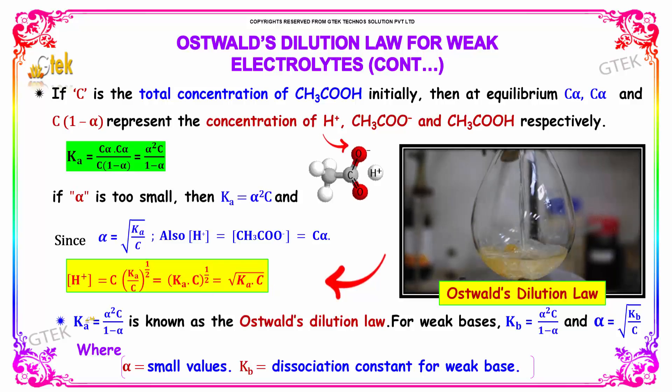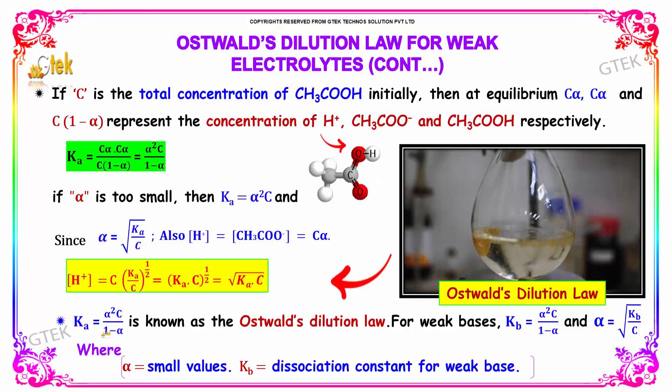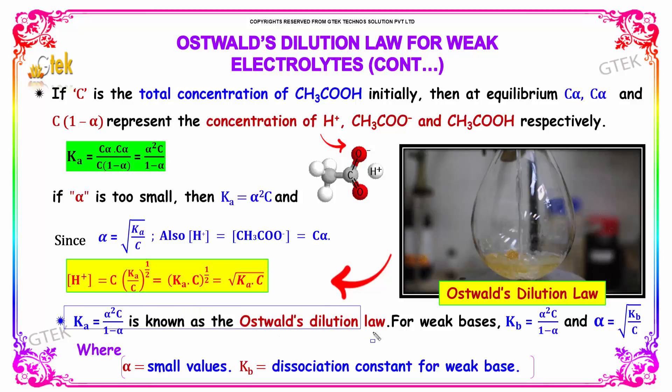The expression Ka equals alpha² × C, or equivalently [H⁺] equals the square root of Ka × C, is known as Oswald's Dilution Law.